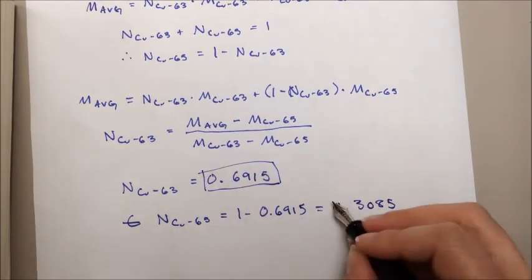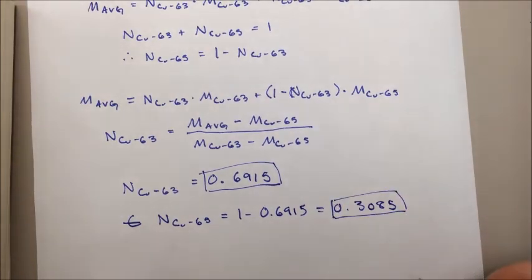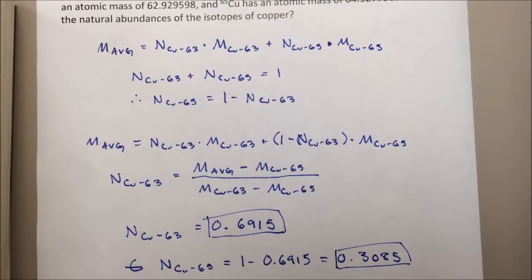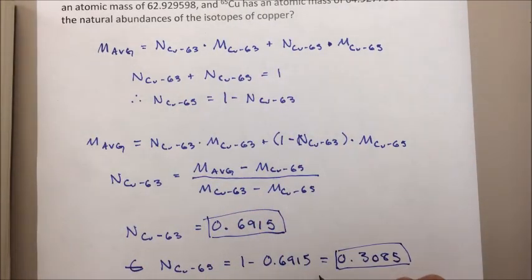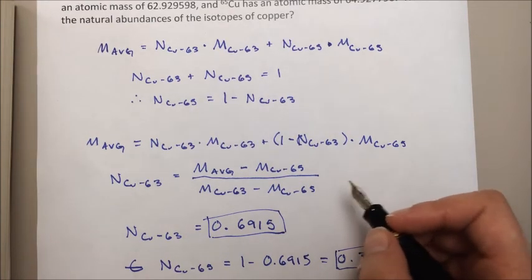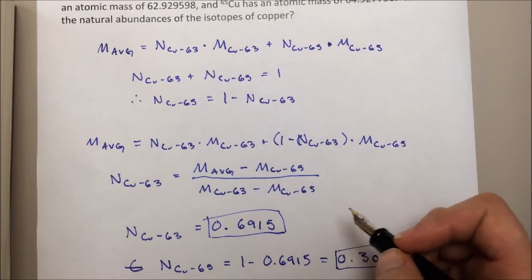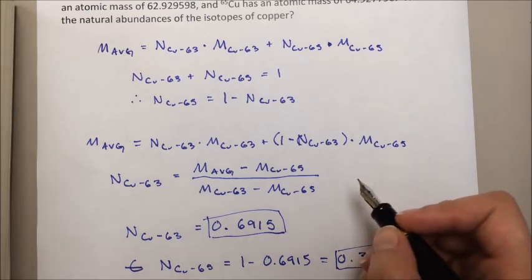So these are the two natural abundances of the two isotopes. This is how you would break it down if there are two isotopes. If there are three isotopes, you generally need to know the natural abundance of at least one of them in order to keep going.